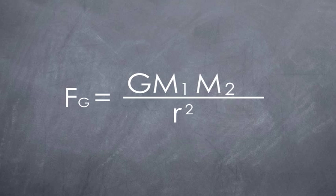G represents the universal gravitational constant. M1 and M2 are the masses of the two objects. R is the straight-line distance between the centers of the two objects.